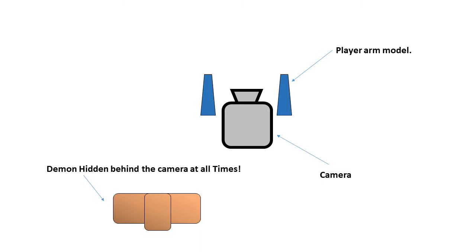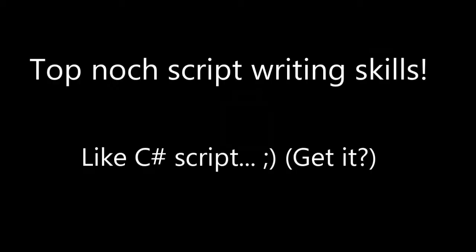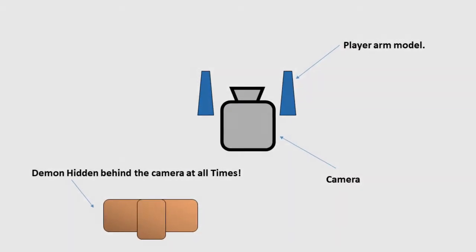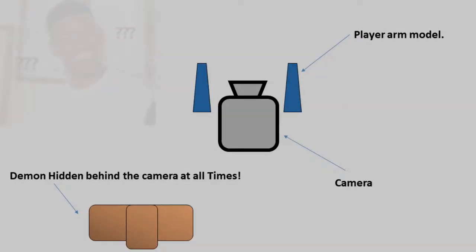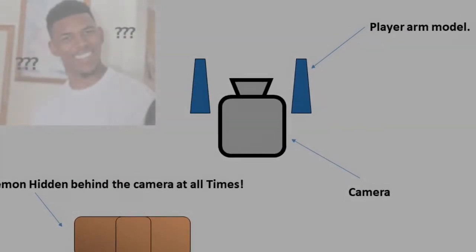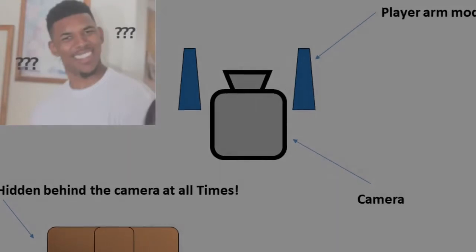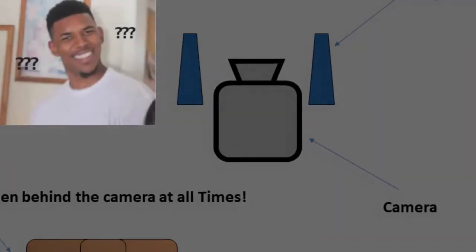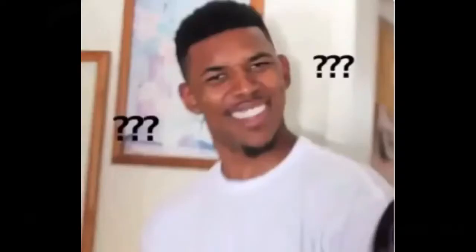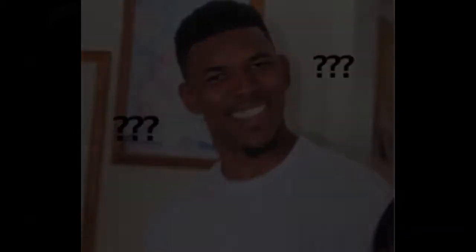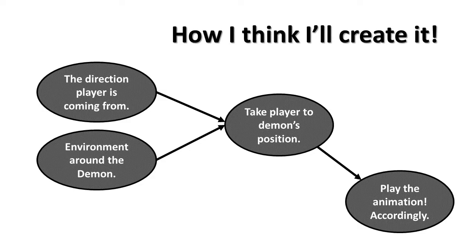I'll be using animation for our gun/arm model — all the glory kill animations will be in the gun model. The gun model will also contain the demon models. Merging separate kill animations for the demon would be more work and more complicated, so I'm keeping everything in one model.